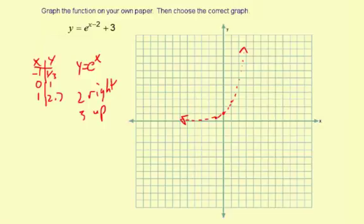So negative 1, one-third, we're going to take that 2 to the right, and then 1, 2, 3 up, about right there. And then 0, 1, 2 to the right, and 3 up, right there.